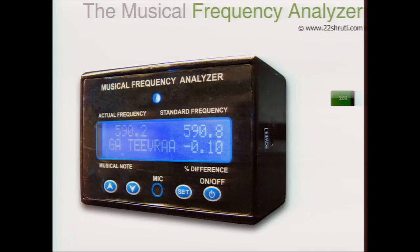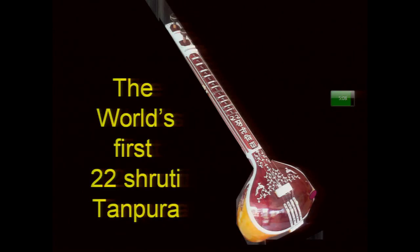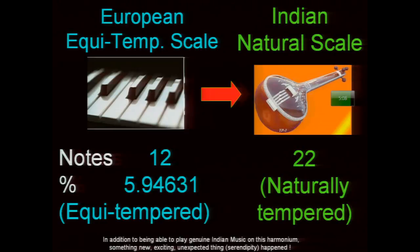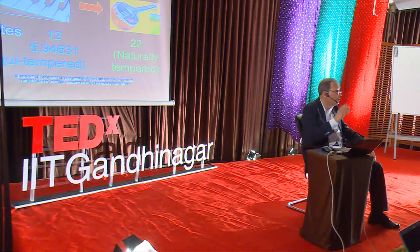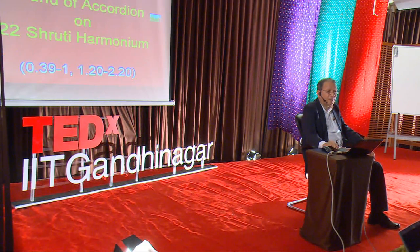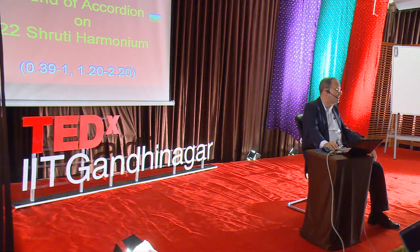This is the world's only patented 22 Shruti harmonium. Since we knew the mathematics and physics of all the frequencies, we were also able to create a 22 Shruti metallophone, a novel musical frequency analyzer with electronic circuits that can instantly analyze sung and played Shrutis. We also produced the world's first 22 Shruti Tanpura — all in an attempt to preserve the Indian natural scale of 22 naturally tempered notes against the European equitempered scale of 12 notes.